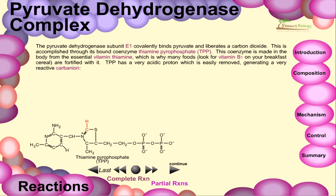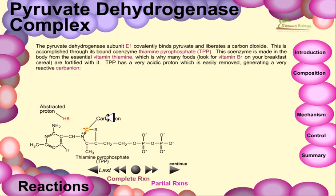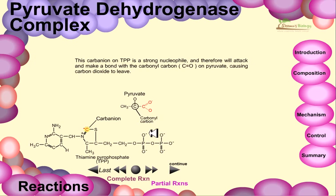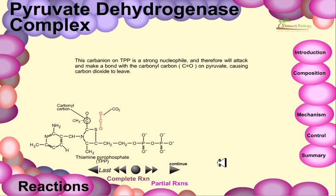The pyruvate dehydrogenase subunit E1 covalently binds pyruvate and liberates carbon dioxide. This is accomplished through the bound coenzyme thiamine pyrophosphate, or TPP. This coenzyme is made in the body from the essential vitamin thiamine, which is why many breakfast cereals are fortified with vitamin B1. TPP has a very acidic proton that is easily removed, generating a reactive carbon ion. This carbon ion on TPP is a strong nucleophile and attacks the carbonyl carbon on pyruvate, causing carbon dioxide to leave.